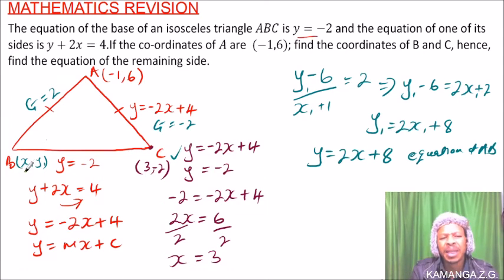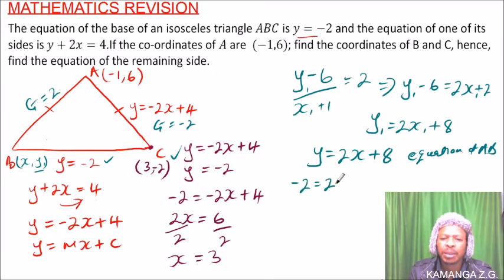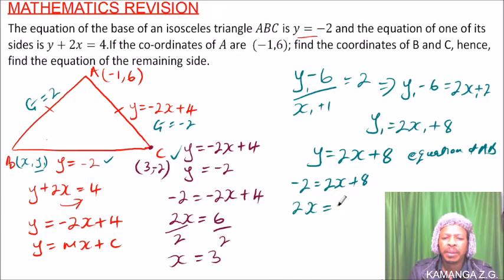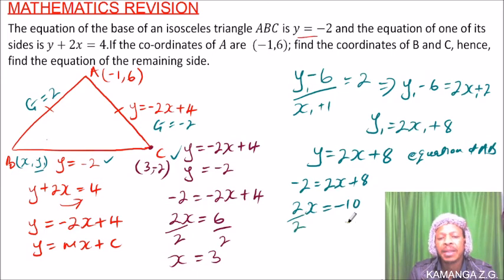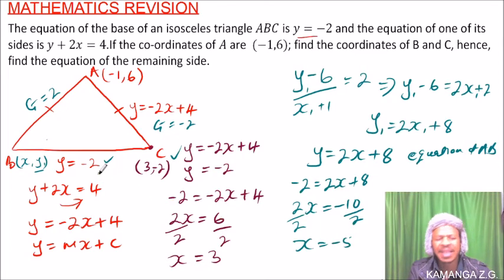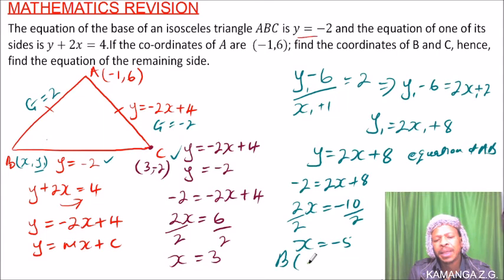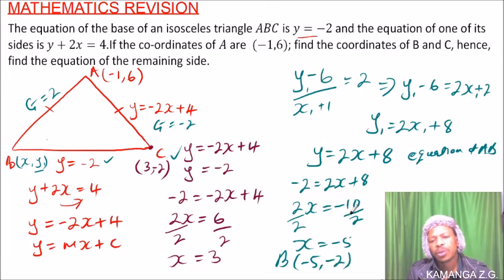Since B lies on the line y = -2, we substitute into y = 2x + 8: -2 = 2x + 8. Taking 8 to the other side: 2x = -2 - 8 = -10, so x = -5. Therefore, the coordinates of B are (-5, -2).